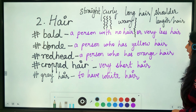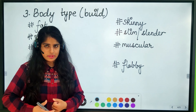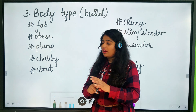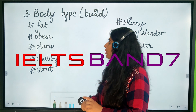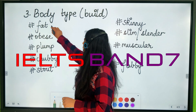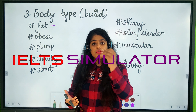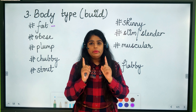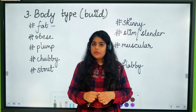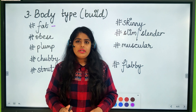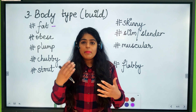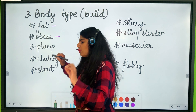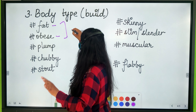Now we'll talk about body type — the structure of a person. Be very careful when using these words, as many of them might hurt the feelings of others. The first word is 'fat,' which means overweight. But if you say directly to someone 'you're looking so fat,' you will hurt that person. Body shaming — insulting someone because of their body shape — is something we should never do.